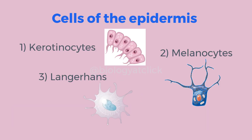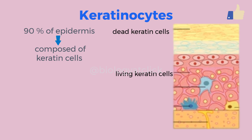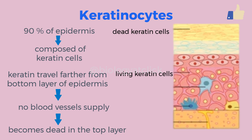The epidermis has three main types of cells: 1. Keratinocytes, 2. Melanocytes, and 3. Langerhans cells. Keratinocytes are the primary type of cell found in the epidermis. In humans, they constitute 90% of epidermal skin cells. As they rise through the layers of the epidermis, they travel farther from the blood vessels that provide them with vital nutrients, effectively killing them by the time they reach the surface layer.